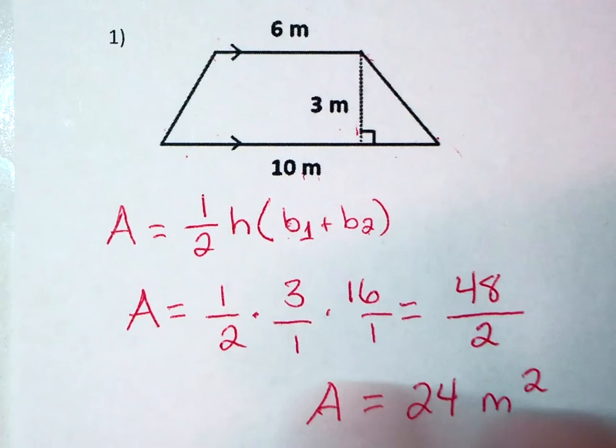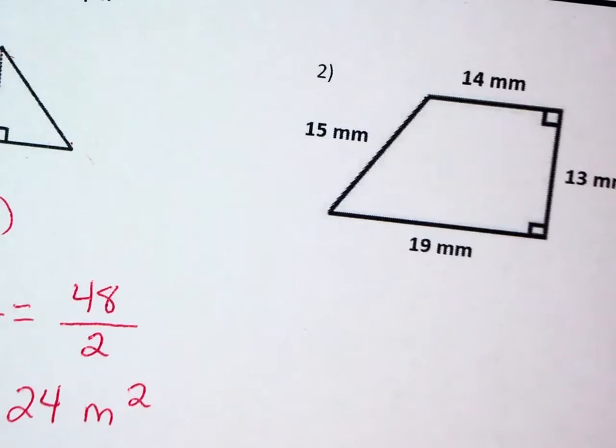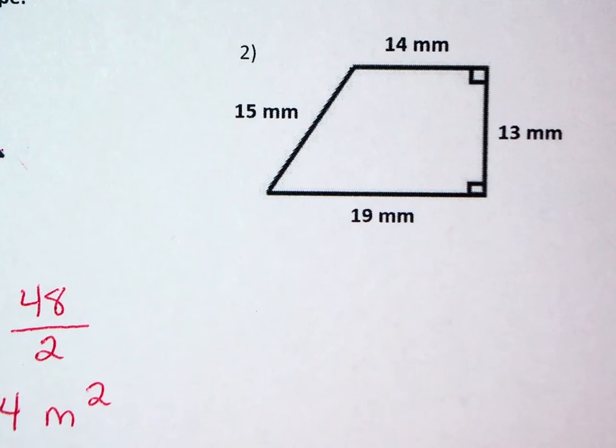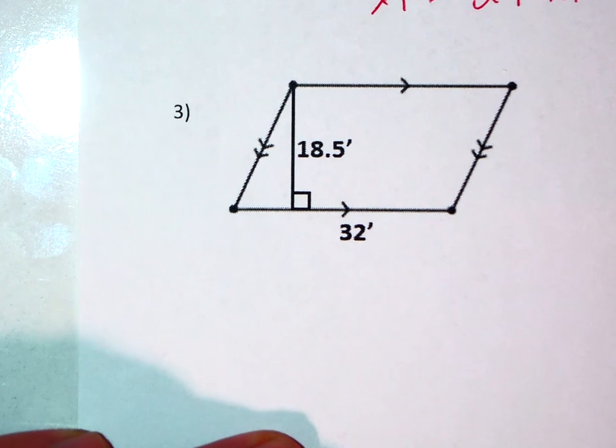Now again number 1 is a trapezoid. Number 2 is an example of a differently shaped trapezoid. Now we're going to look at number 3 which is not a trapezoid. This is a parallelogram.